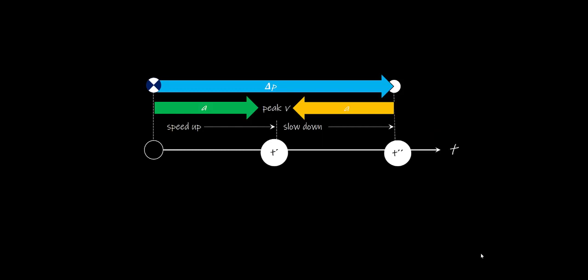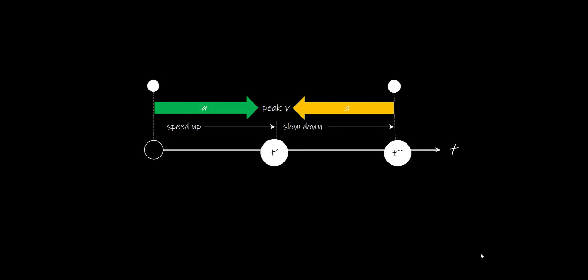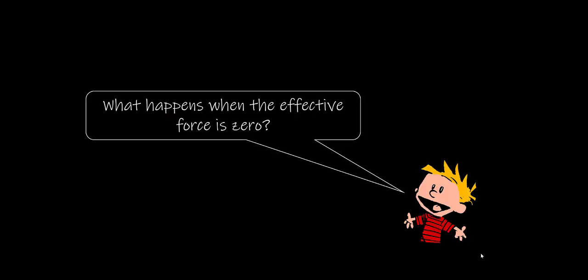The effective force vector has to be in the same direction as the acceleration vector. When the cup is speeding up and the acceleration is in the direction of travel, the effective force vector is also in the direction of travel. When the cup is slowing down and the acceleration is in the opposite direction, the effective force vector is also in the opposite direction. One thing I've asked you in the prep guide, and I'll have you discuss with your groups, is what happens when the effective force is zero.